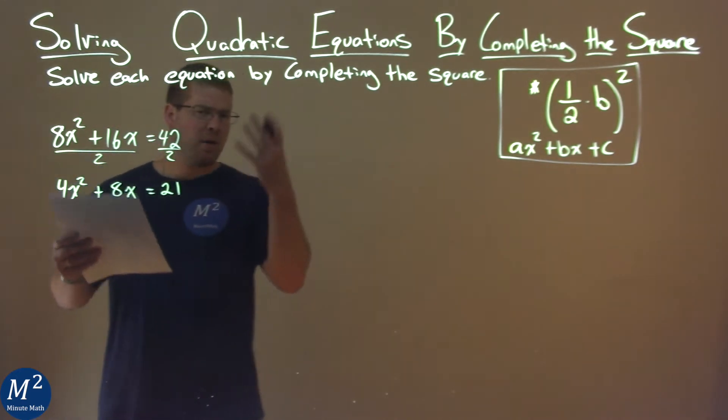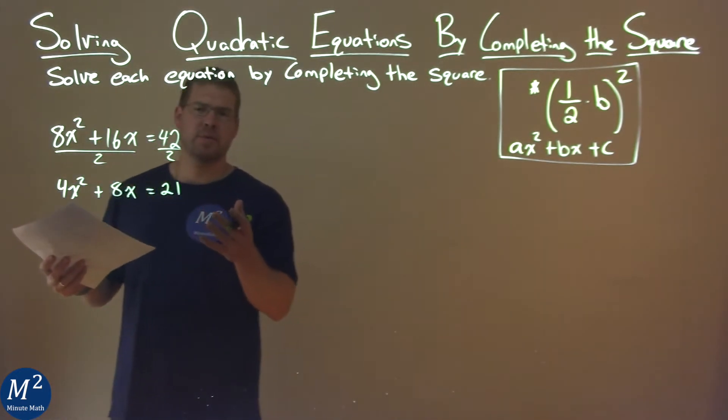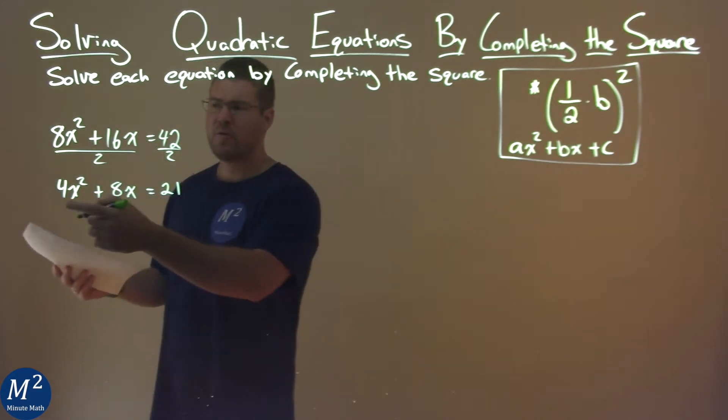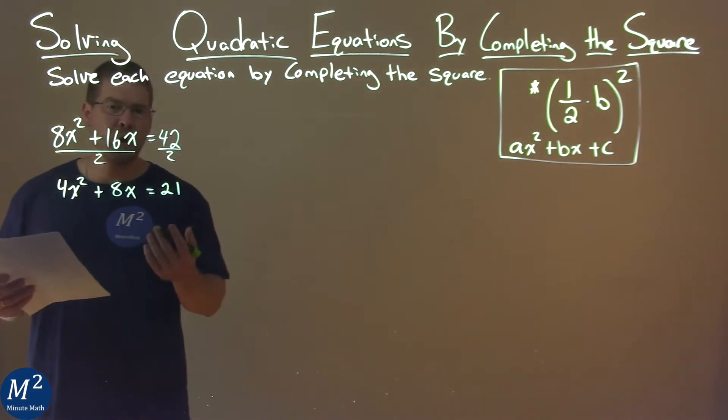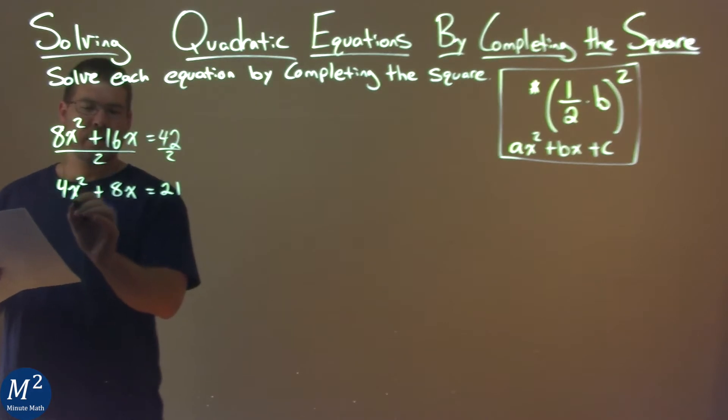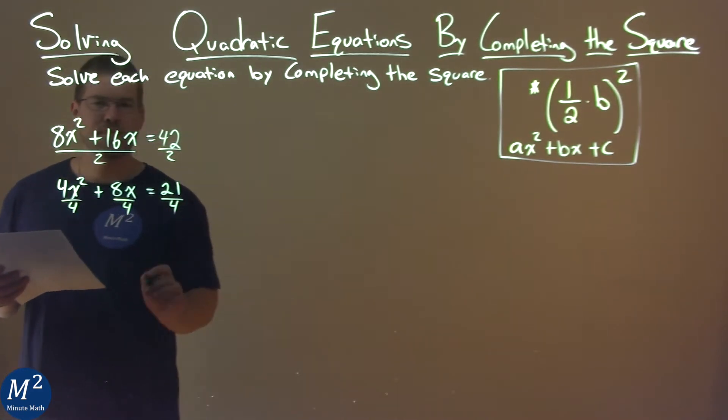Now, for completing the square, that was just to simplify it a little bit. For completing the square, when the a value is greater than 1, we're going to have to divide everything by that coefficient. So divide this by 4, every part here.